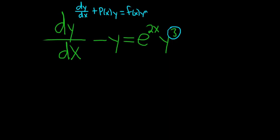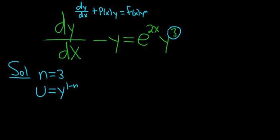Let's go ahead and try to solve it. The first step is to identify our n, so n is equal to 3. Then we make our substitution. For the Bernoulli equation, the substitution is u equals y to the 1 minus n, which gives us u equals y to the 1 minus 3, so u equals y to the negative 2.